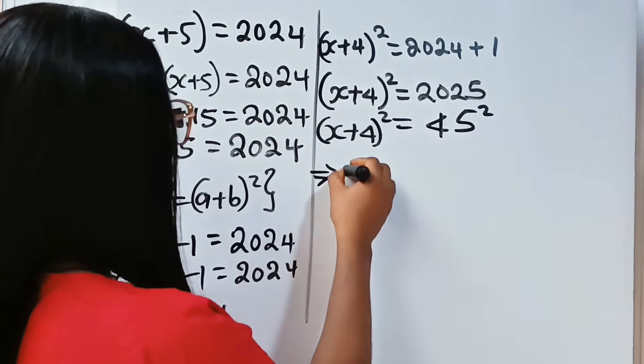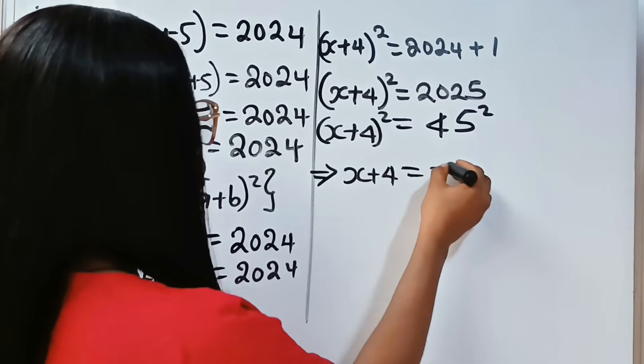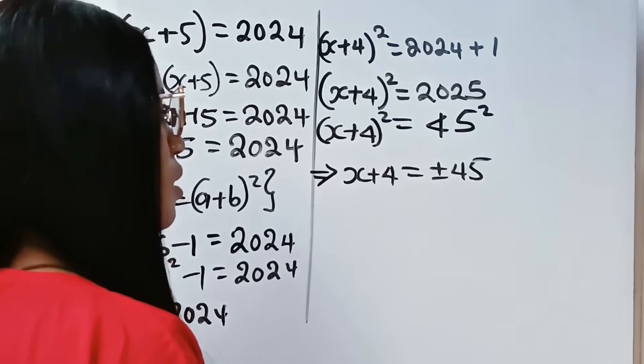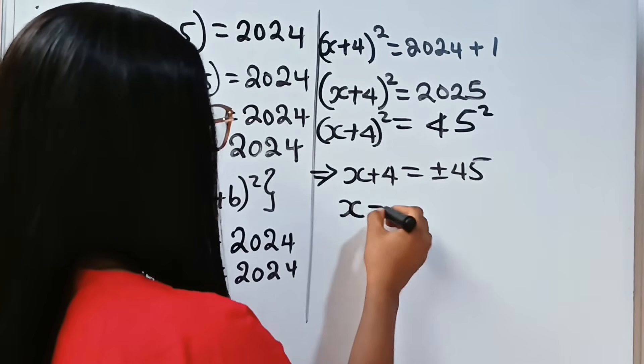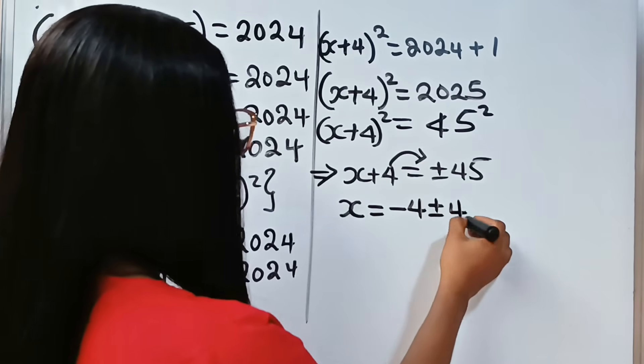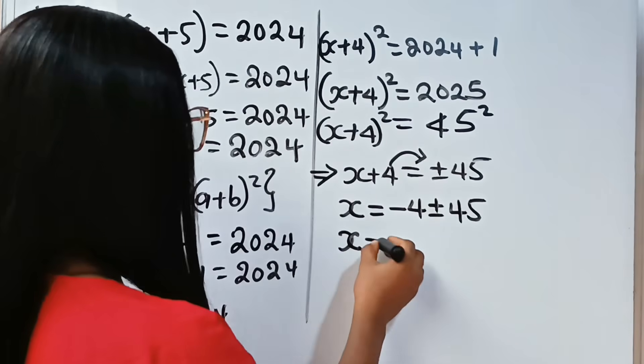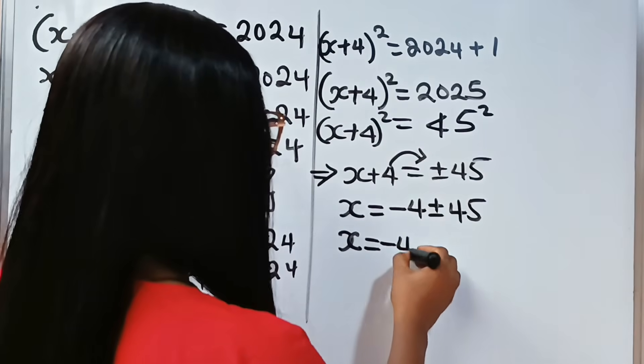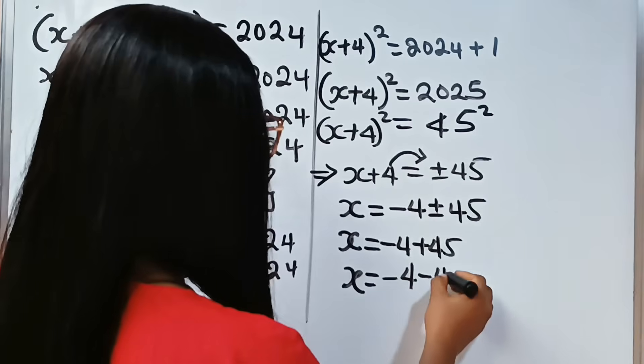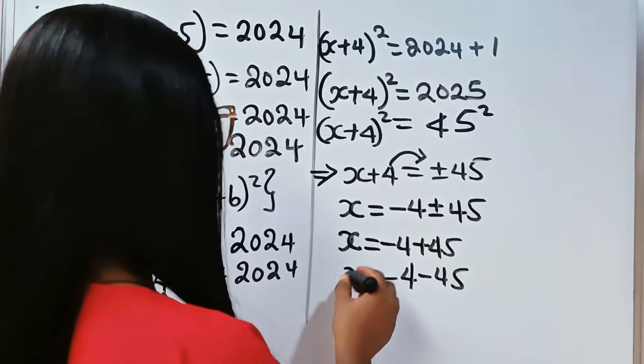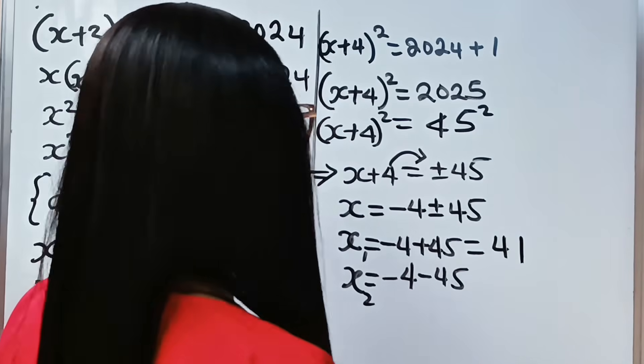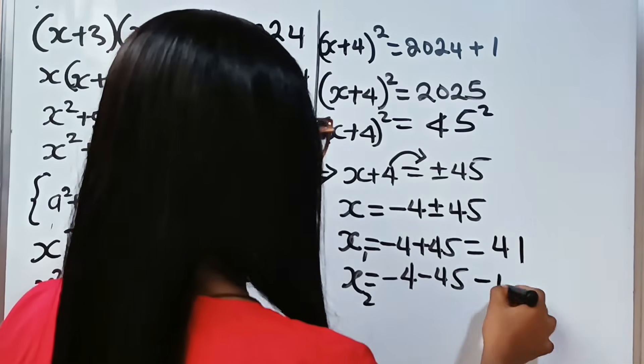You can see that if (x + 4)² = 45², this simply means x + 4 = ±45. So x = -4 ± 45. We have x = -4 + 45 = 41, and x = -4 - 45 = -49.